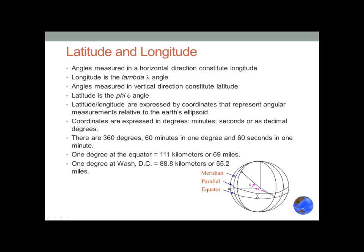That 180-degree line is the international date line — where the 24-hour time changes and the day changes. For latitude, imagine a fixed extension at the equator and a movable extension that goes north or south to whatever map object you want to measure. That angle is the degrees of latitude. They are equidistant regardless of where you are north or south of the equator, with only a slight difference due to the curvature of the Earth, which is minimal enough that we don't deal with it.